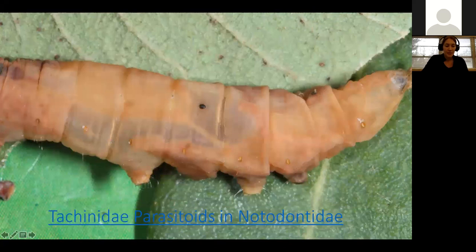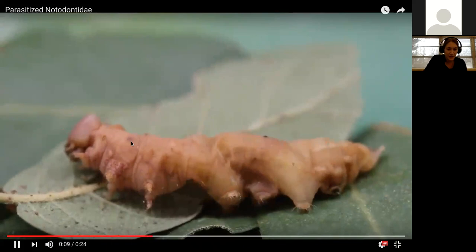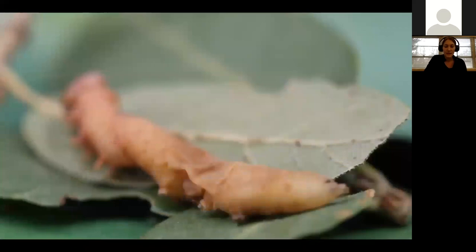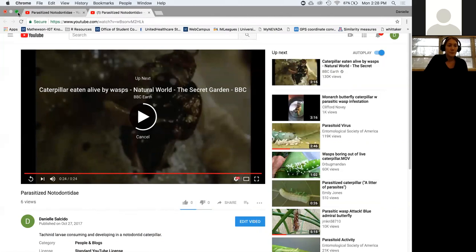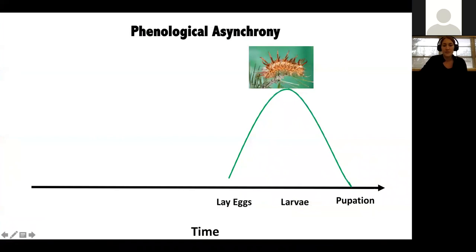I have a video to show you — if you are faint of heart, you may not want to watch. This shows a notodontid caterpillar with endoparasitoids moving around inside. You can see the mouth parts of the parasitoid larvae consuming from the inside. These were actually tachinid larvae that will pupate inside that body and emerge as flies.